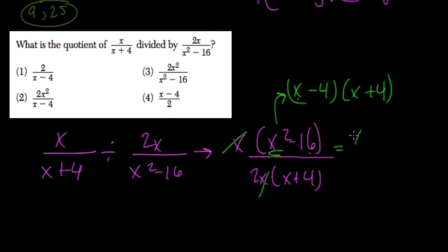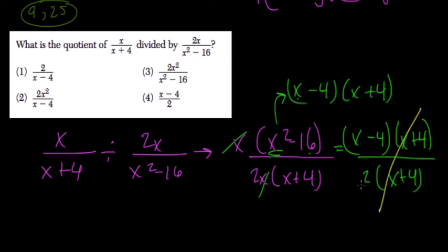What's nice here, though, is the x minus 4 times x plus 4, and then over x plus 4 here, so it's 2 times x plus 4. These two cancel out. You have x minus 4 over 2.